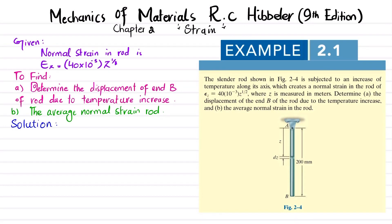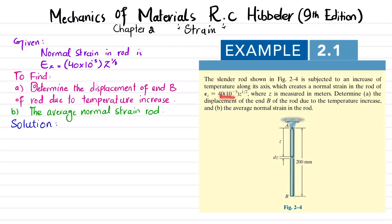Welcome back. In this video we are going to solve Example 2.1 taken from Chapter 2 on Strain from the book Mechanics of Materials by R.C. Hibbeler, 9th edition. The statement is: the slender rod shown in Figure 2.4 is subjected to an increase of temperature along its axis, which creates a normal strain in the rod of epsilon_z = 40×10⁻³ × z^(1/2), where z is measured in meters. You can see this is rod AB which is subjected to an increase in temperature.